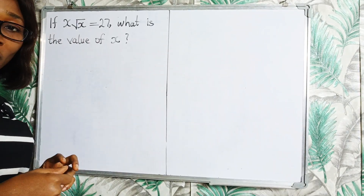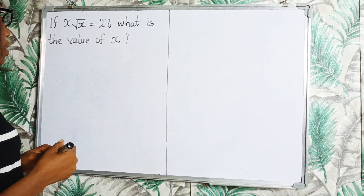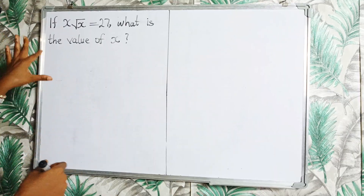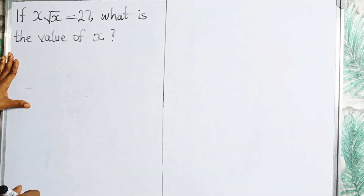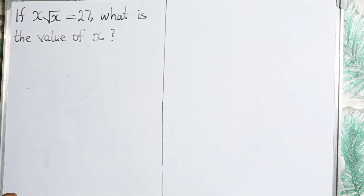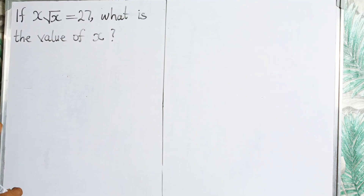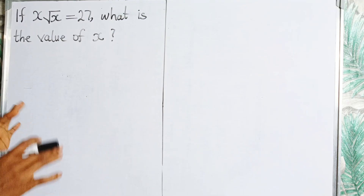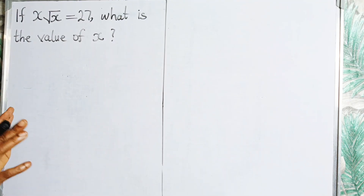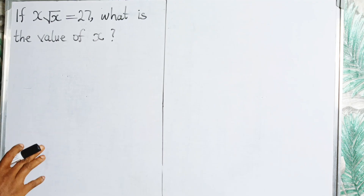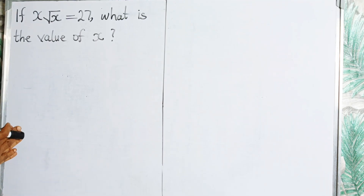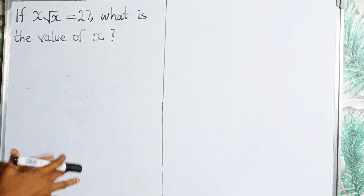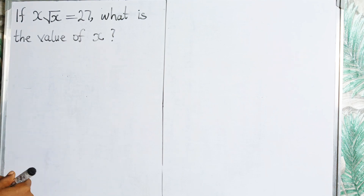Hello lovelies, welcome to today's video. In today's video we will consider this question on the board. The question says: if x root x equals 27, what is the value of x? There are two approaches to solving this question. I'm going to solve the first one and then the second one, so you choose whichever way is easy for you.